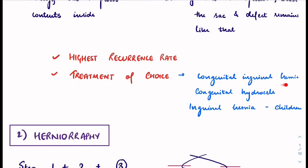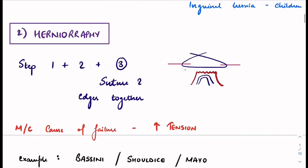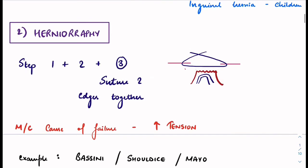Herniotomy is the treatment of choice for congenital inguinal hernia, congenital hydrocele, and inguinal hernia in children.